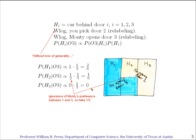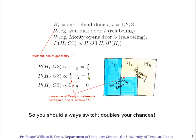The Bayes denominator is the sum of these three terms, and the probability of each hypothesis is its numerator divided by that denominator. You can see right here that hypothesis 1 is larger than hypothesis 2 by a factor of 2. In other words, you should always switch doors in this game — it doubles your chances of winning.